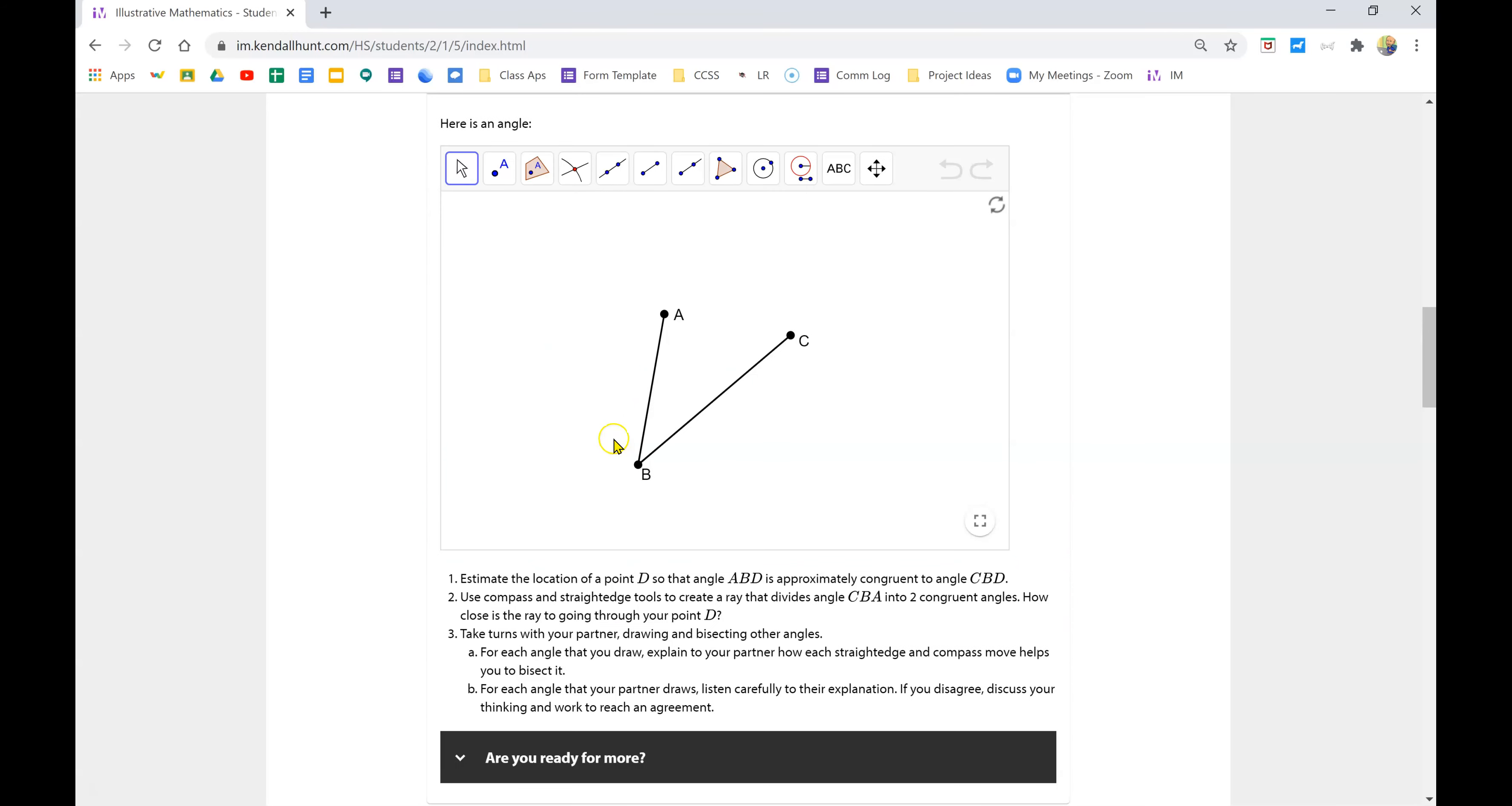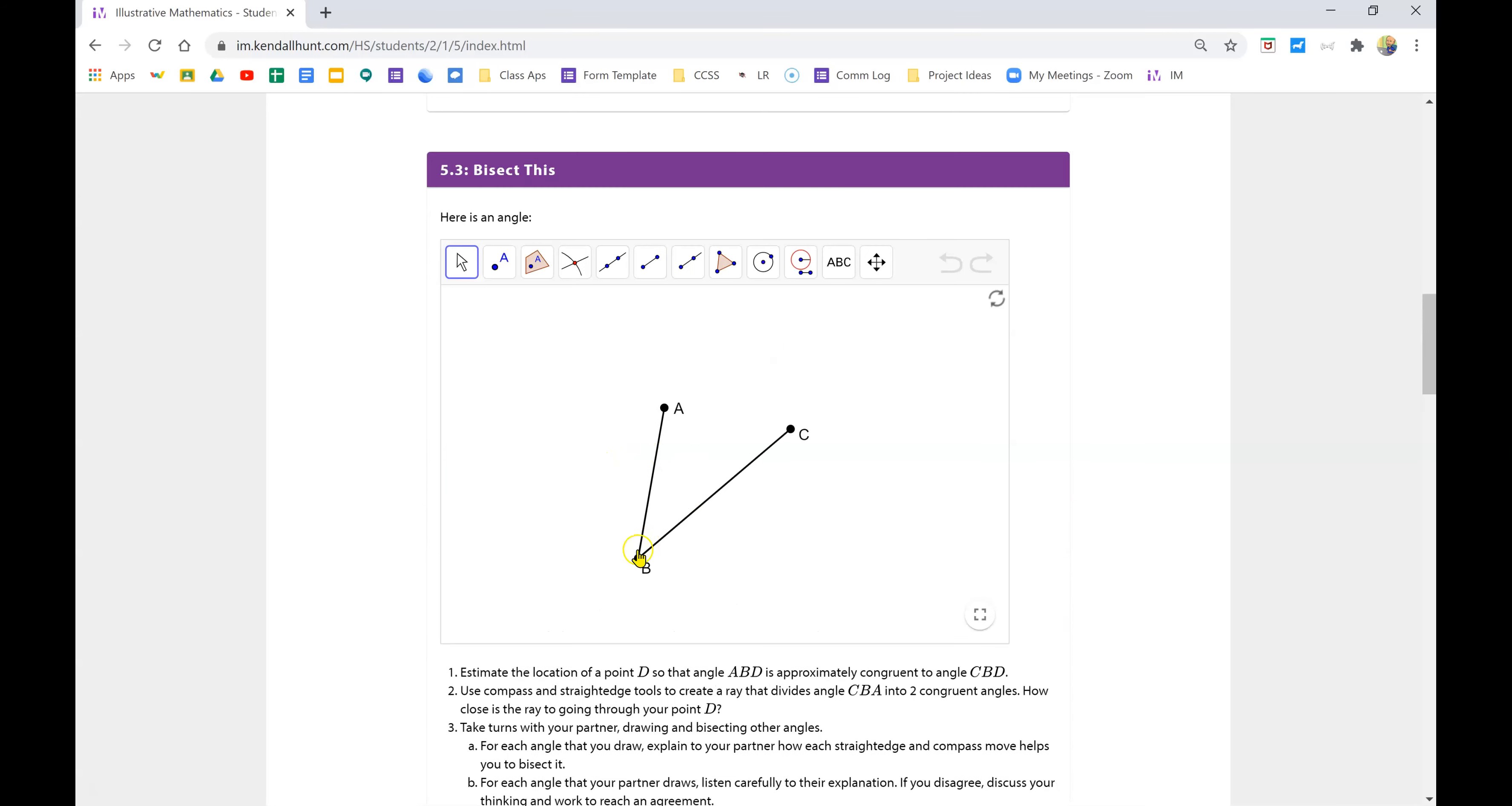Okay, the next one is asking you to find the middle of an angle. So you have this angle ABC. The directions say estimate the location of a point D so that it splits the angle, or so that angle ABD is approximately congruent to angle CBD. So you can just click on the point tool and I'm going to just guess somewhere between A and B and put a point there. I'm just guessing. It doesn't matter if you're accurate or not, it's just a guess.